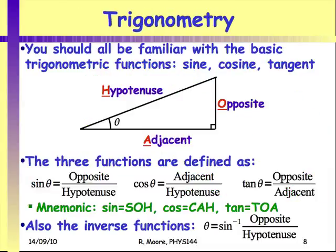Now we're going to go over some basic math that you should all be familiar with or need to get familiar with. Sine, cosine, tangent — basic right-angle triangle. You have the mnemonics to remember which is which: sine is opposite over hypotenuse, cosine is adjacent over hypotenuse, and tangent is opposite over adjacent (SOH-CAH-TOA).